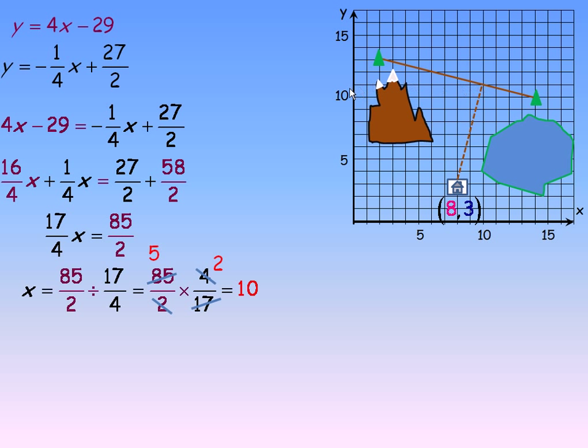Now we need to find the y-coordinate. It looks like it's around 11, but we'll verify that. And so you substitute the 10 in place of x in either of the two equations. I'm going to use the y = 4x - 29 one. And we substitute 10 in place of x. 4 times 10 is 40, minus 29 is of course 11. So the point is (10, 11). So we'll write that on the graph. That's the point (10, 11).